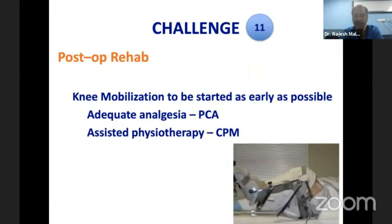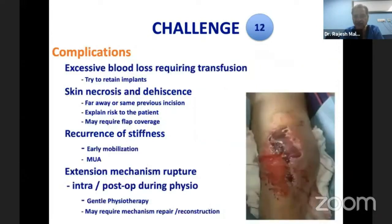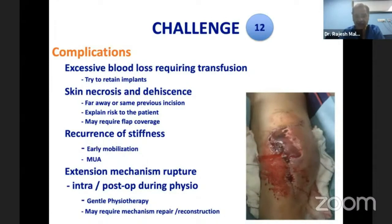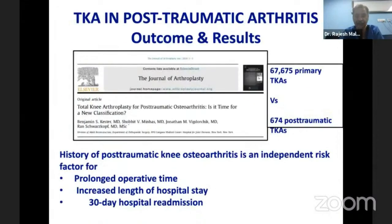The eleventh challenge is rehabilitation — mobilization must be started as early as possible. The twelfth and last challenge is complications: you must be prepared to avoid excessive blood loss, skin necrosis, wound dehiscence, recurrence of stiffness, and extensor mechanism rupture, particularly during rehabilitation.